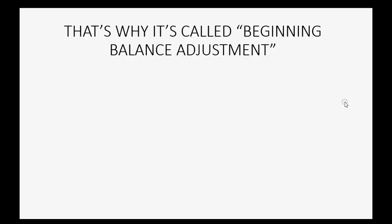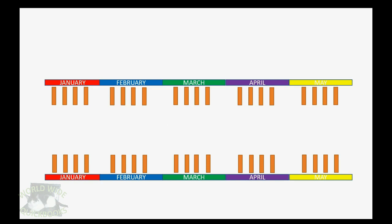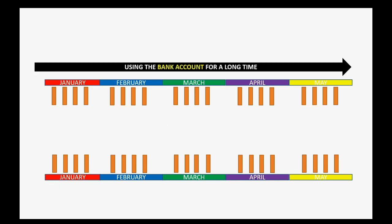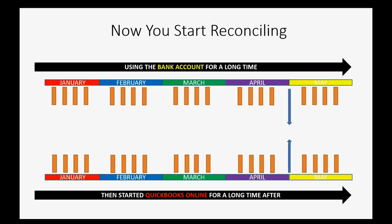So when you do your first month's bank reconciliation, you have to adjust for the fact that the book balance at the beginning was never entered. That's why it's called the beginning balance adjustment. The difference in the first month's bank reconciliation must be from the beginning book balance that was never entered. So let's imagine you have been using the bank account for a long time and then started using QuickBooks Online for a long time. When you start reconciling, you pick a specific moment to begin.